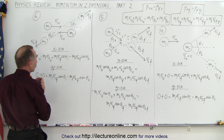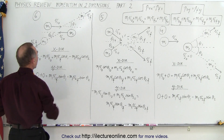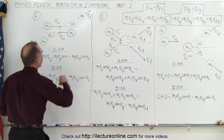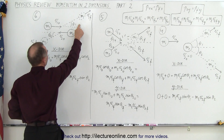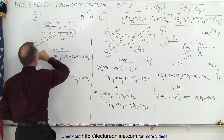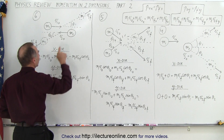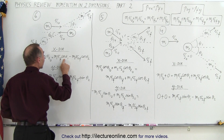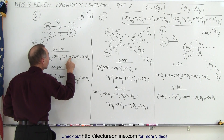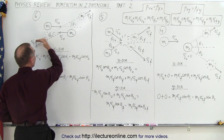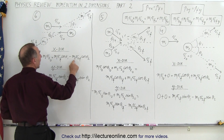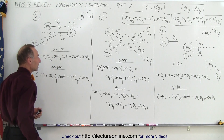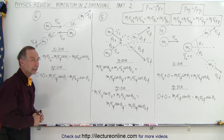After the collision, they move out at an angle, so we take the x component of each: we end up with M1 V1 final times the cosine of the angle, minus M2 V2 final times the cosine of the angle, because this one is moving to the left.